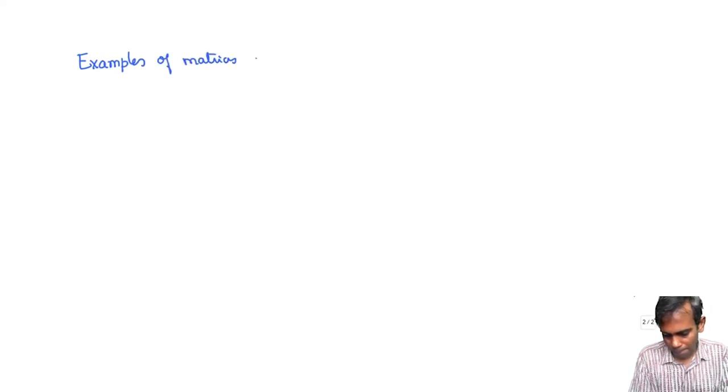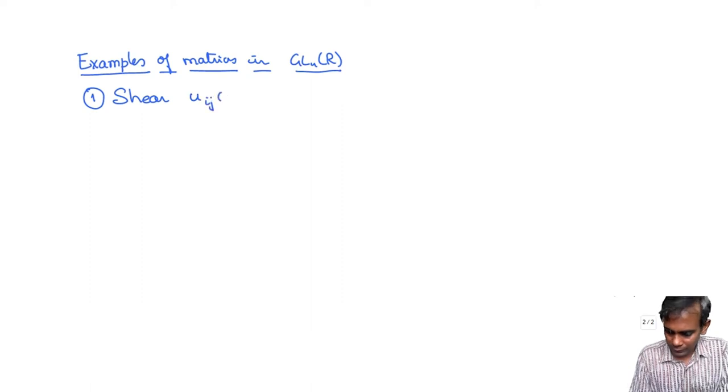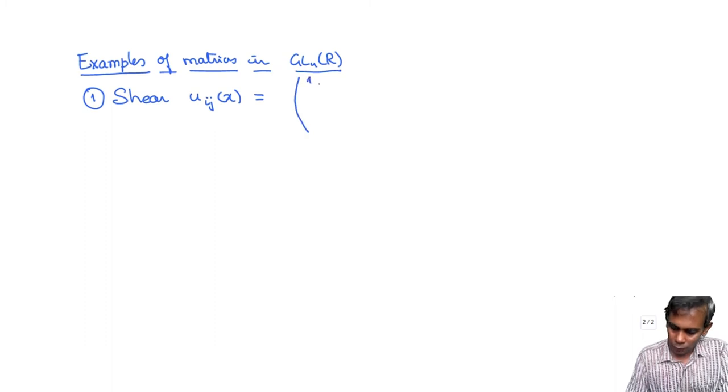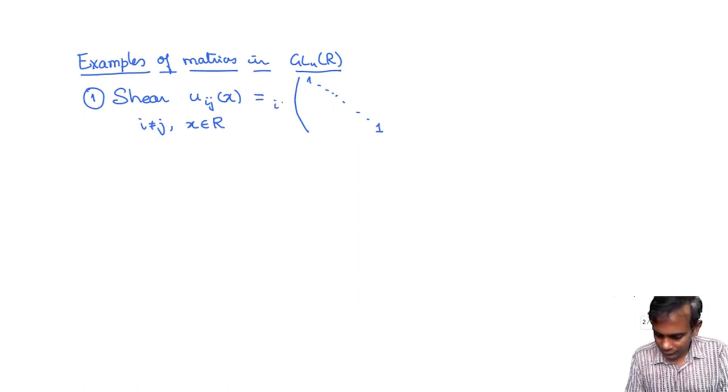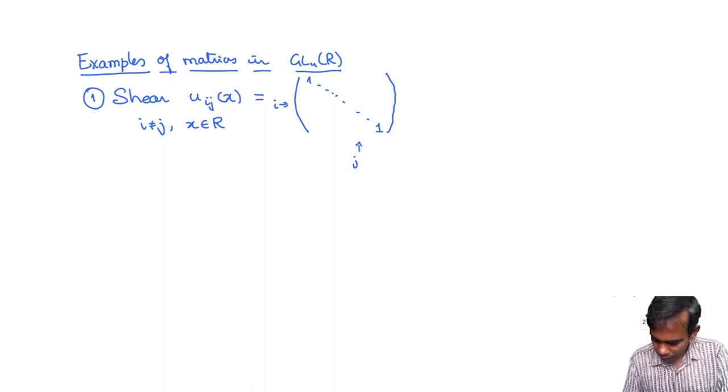Let's look at some examples of matrices in GL_n(R). So the first is called shear and it's denoted by u_ij(x). So this is a matrix which is given by 1s all along the diagonal. And here we are assuming that i is not equal to j and x is any element of R. And what you do is you take the ith row and you take the jth column. And in here you put in the ith row and jth column you put x. So that is the shear u_ij(x).